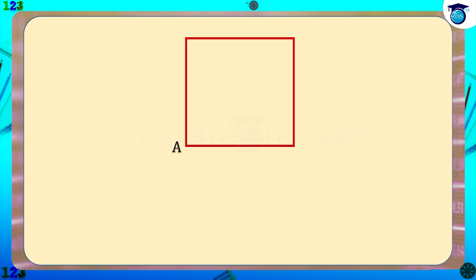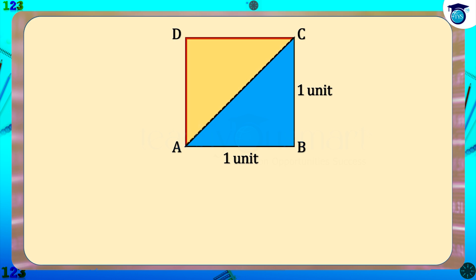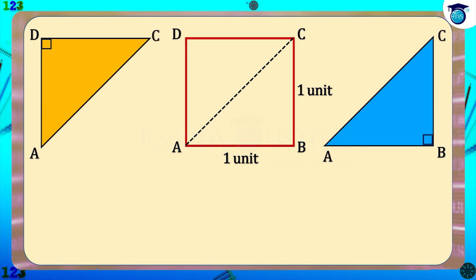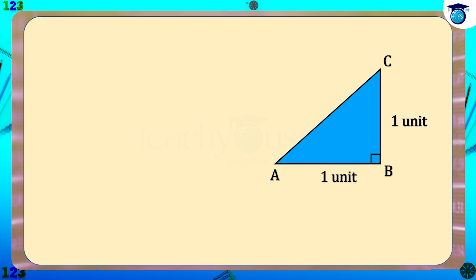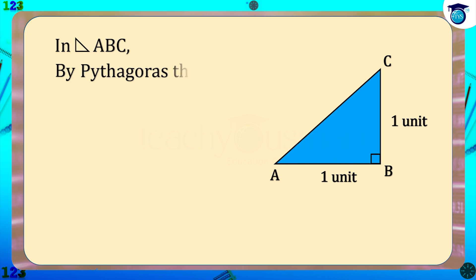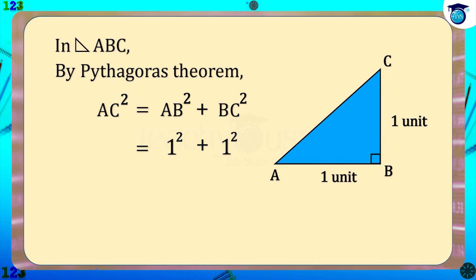Consider a square ABCD having sides of 1 unit. Draw the diagonal AC. Now we get two triangles: triangle ABC and triangle ADC. What about the length of AC? Triangle ABC is a right angle triangle. So in triangle ABC, by the Pythagorean theorem: AC² = AB² + BC² = 1² + 1² = 1 + 1 = 2. Therefore AC = √2 units.